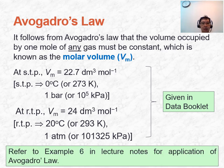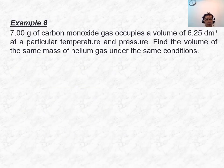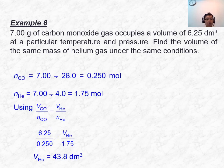Stop the video now and attempt example 6, taking 3 to 5 minutes. To solve it, apply Avogadro's Law — volume is directly proportional to number of moles. Find moles of carbon monoxide: 0.250 mol, and moles of helium: 1.75 mol. Using V₁/N₁ = V₂/N₂, the volume of helium is 43.8 dm³.